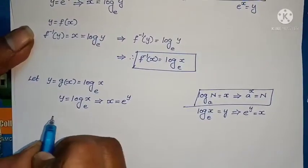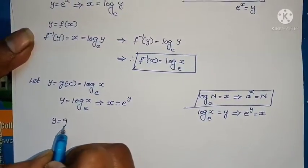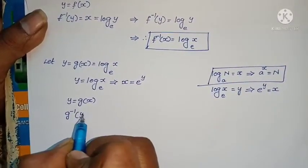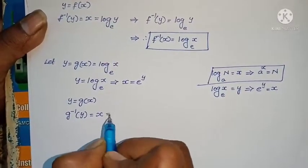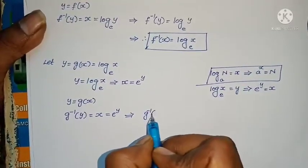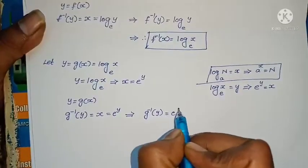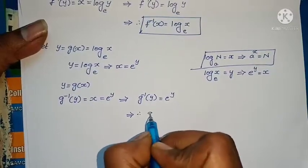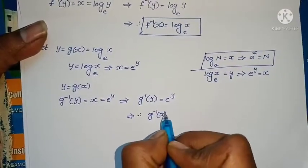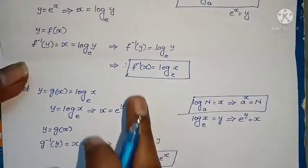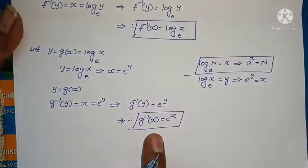Since y = g(x), moving g to the other side gives g inverse of y = x. We already found x = e^y. That implies g inverse of y = e^y. Therefore, g inverse of x = e^x.